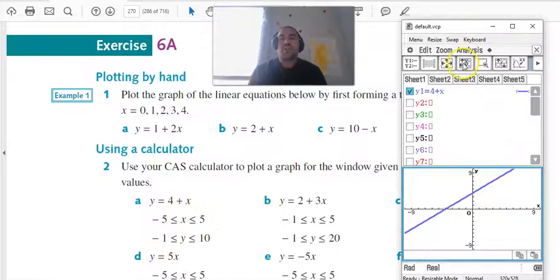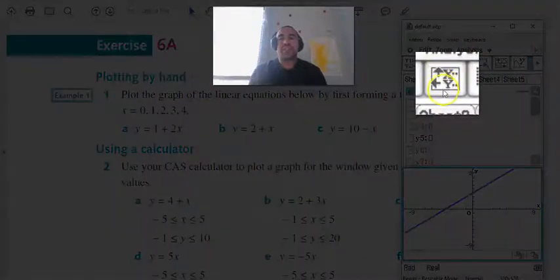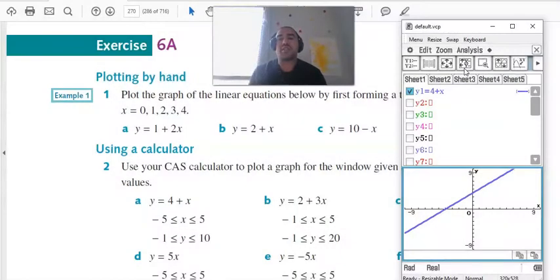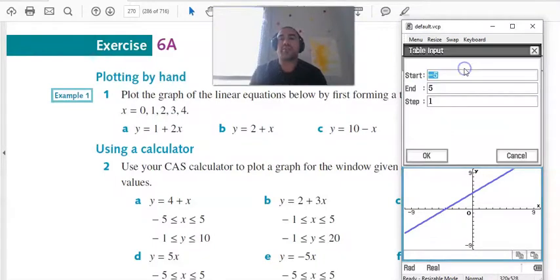So we're going to go into our calculator and click this button right here. This is going to determine which set of x values we need. When we're talking about the different x values, this is called a domain.